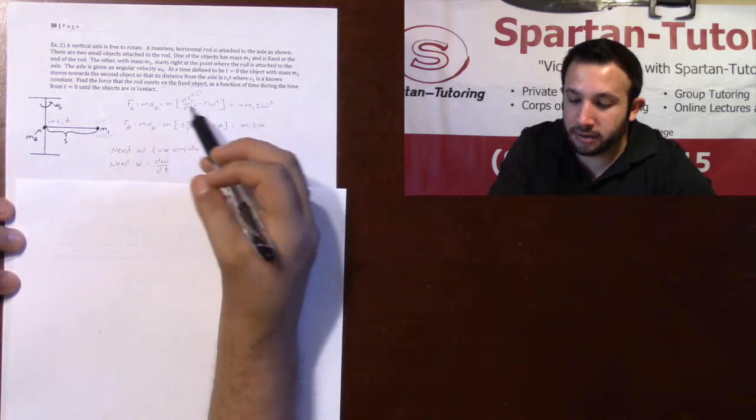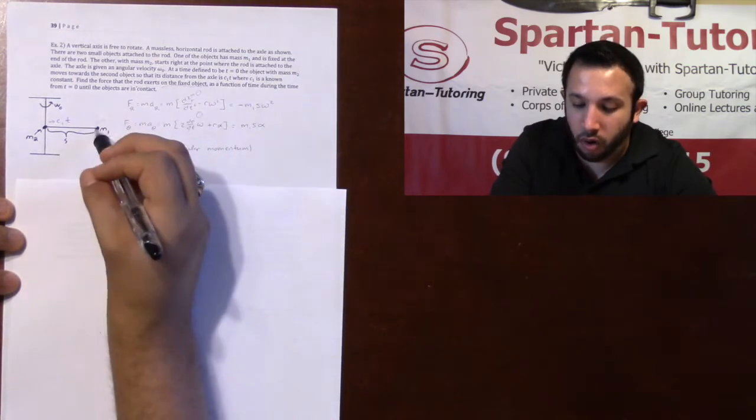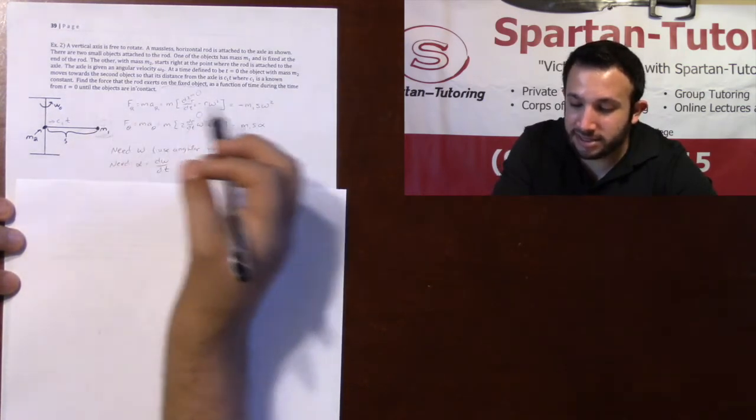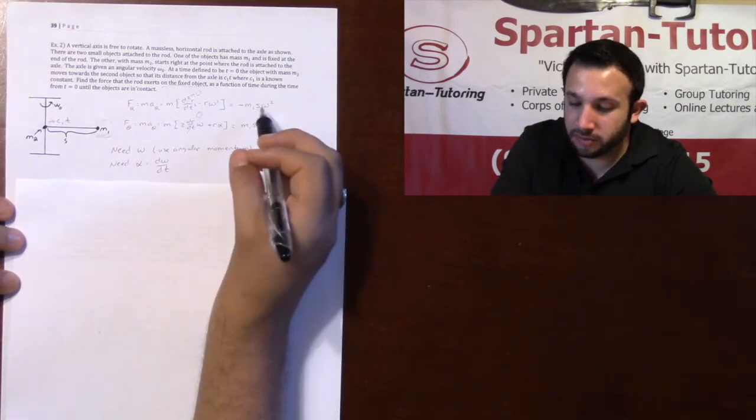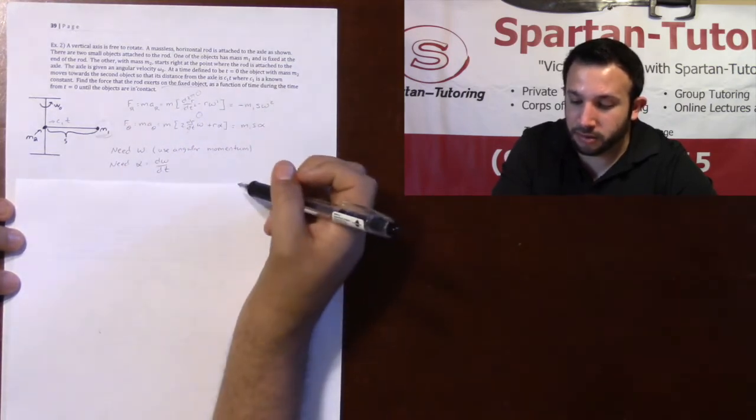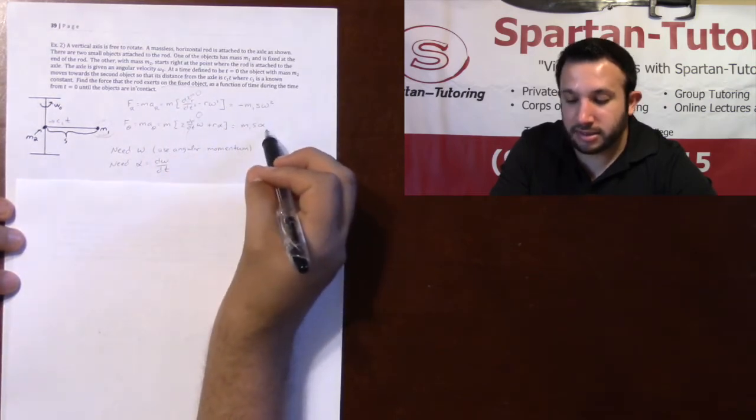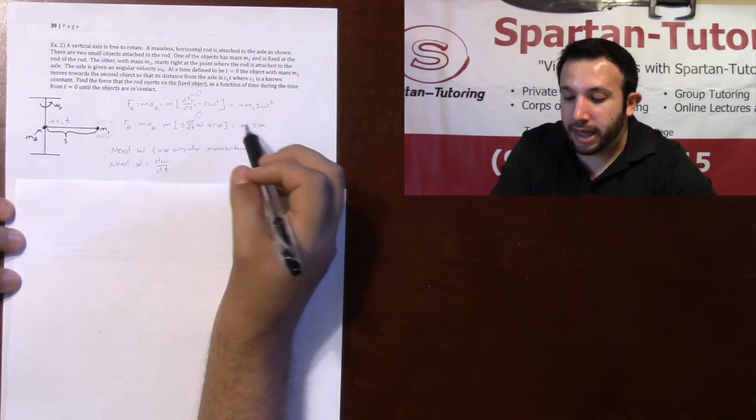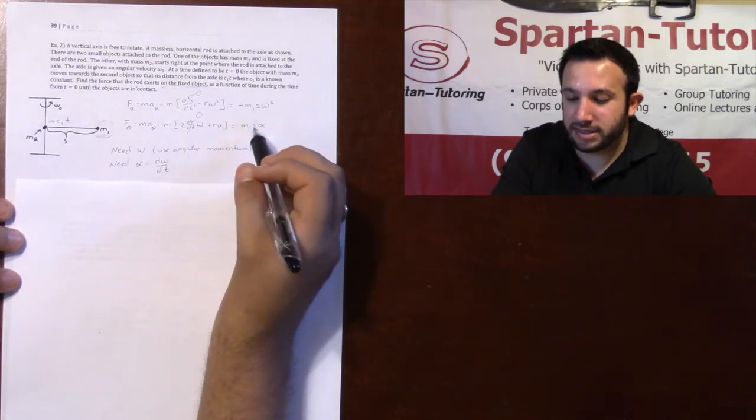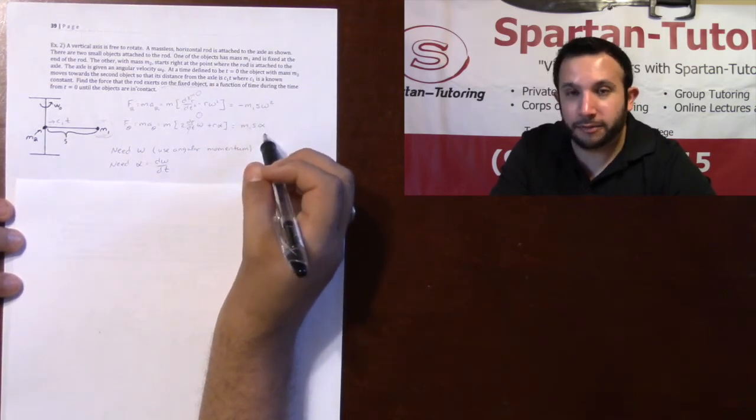So this is going to be a negative m1, and then your r, it's staying at a constant s. Your r is just going to be s omega squared. And your f theta is going to be m times that s times alpha. Now, m1's given to us, s is given to us, but omega and alpha aren't.